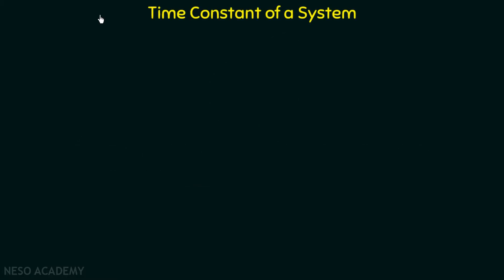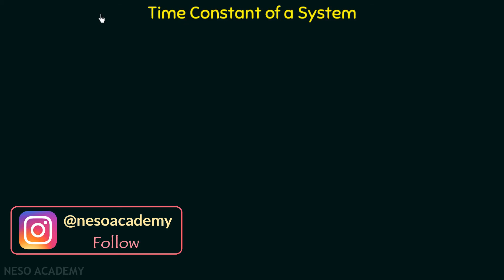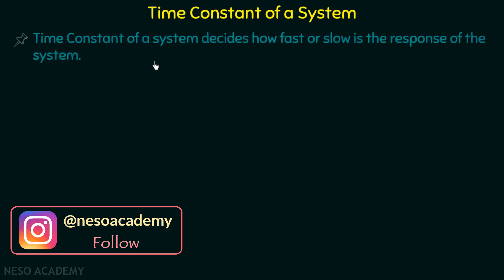Before discussing the time constant form of a control system, we will first see the meaning of time constant of a system. The time constant of a system decides how fast or slow is the response of the system — in other words, it decides the speed of the system.